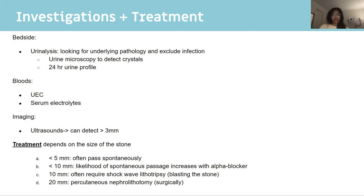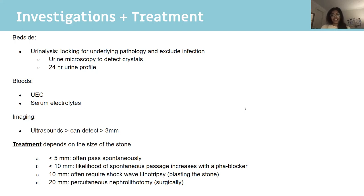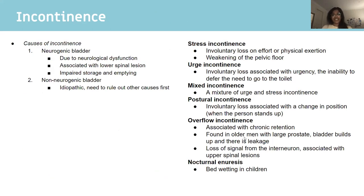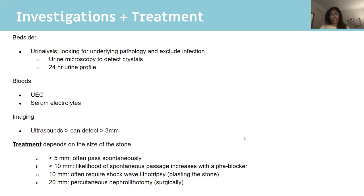For investigation of renal stones: urinalysis to exclude infection, blood tests, and imaging. If the stone is greater than 3mm you can detect it on ultrasound; calcium stones can also be seen on x-ray. For treatment: if less than 5mm it can usually be passed spontaneously. Larger stones may require shock wave lithotripsy (blasting the stone) or percutaneous nephrolithotomy. The key takeaway is the presentation — loin-to-groin pain — and what the patient might present with.